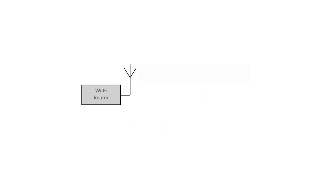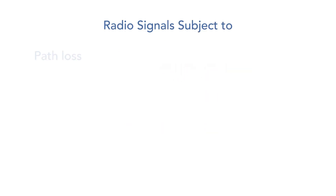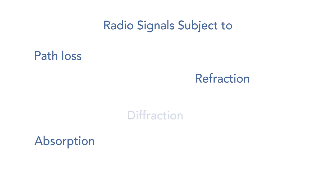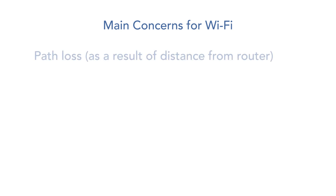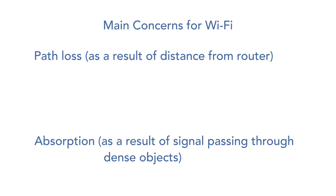Like any other radio signal, Wi-Fi signals are subject to effects like path loss, absorption, refraction, diffraction, and reflection. For the majority of Wi-Fi applications though, the main things we need to worry about are path loss and absorption.